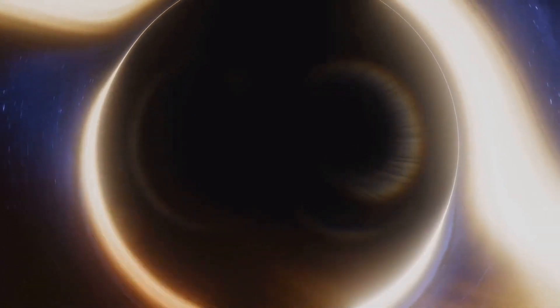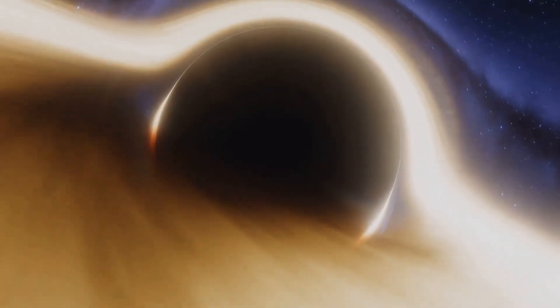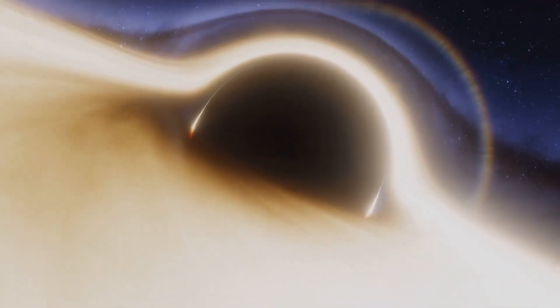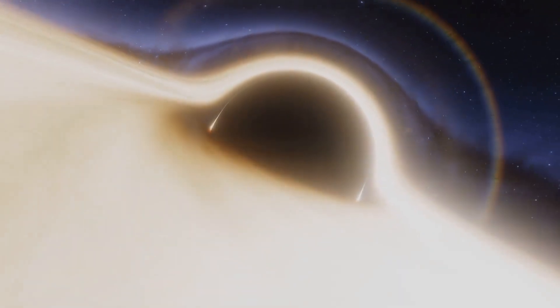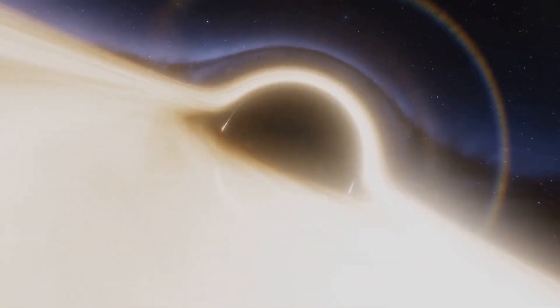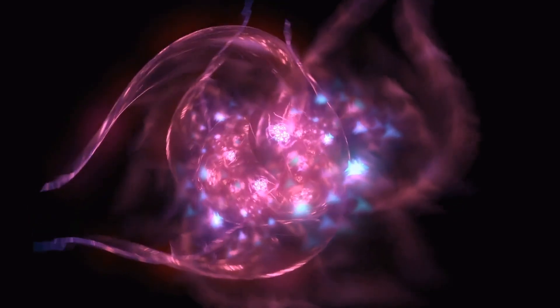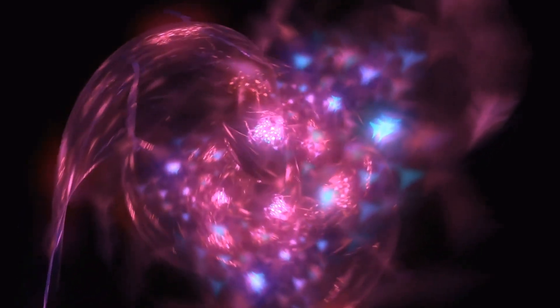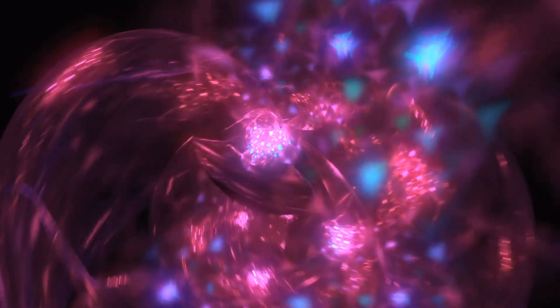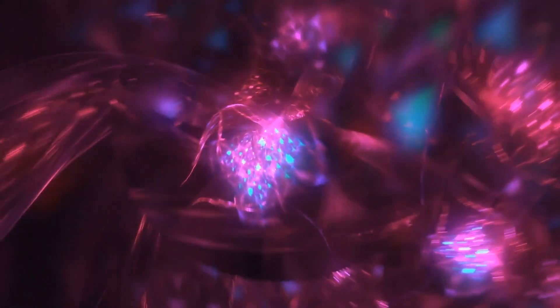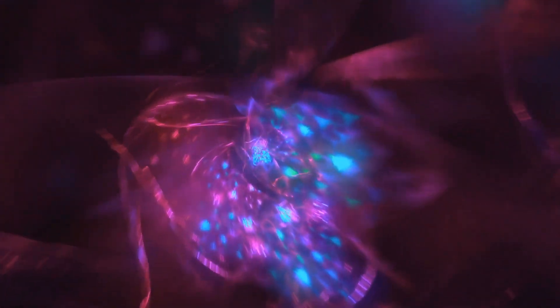Furthermore, supermassive black holes at the centers of galaxies can remain hidden by the dense surrounding dust and gas, further obstructing direct observation. In some cases, instead of pulling matter into their interiors, black holes can expel it, generating jets of bright and rapidly moving material that can be observed from afar.